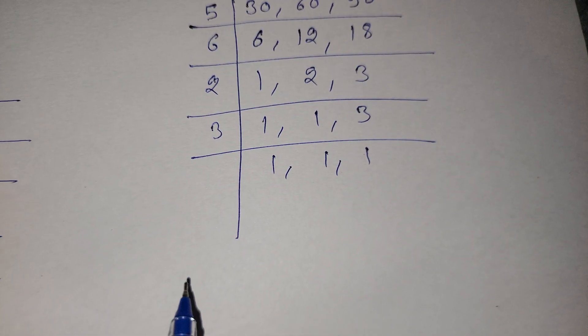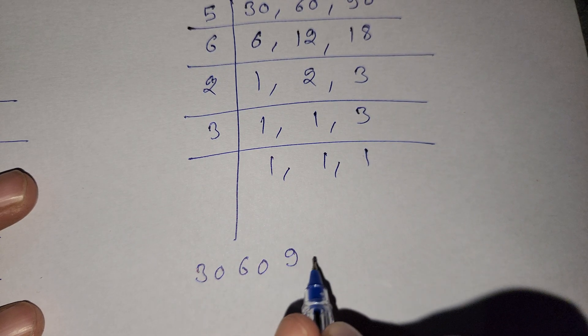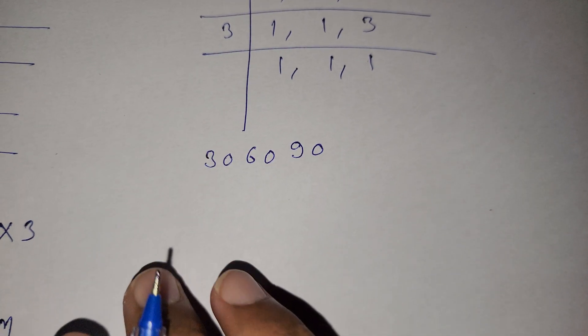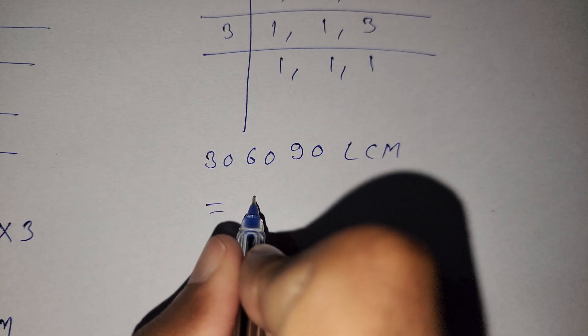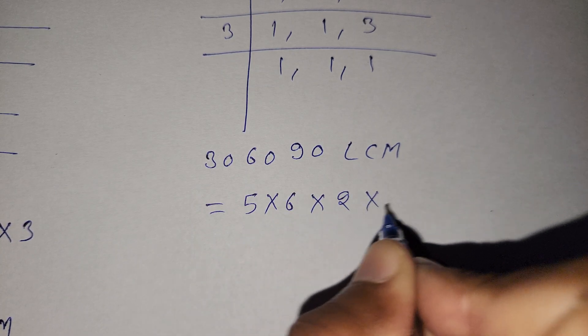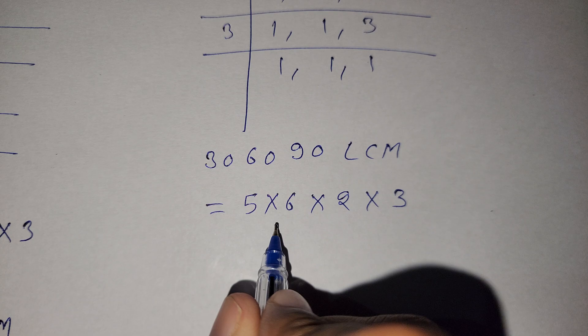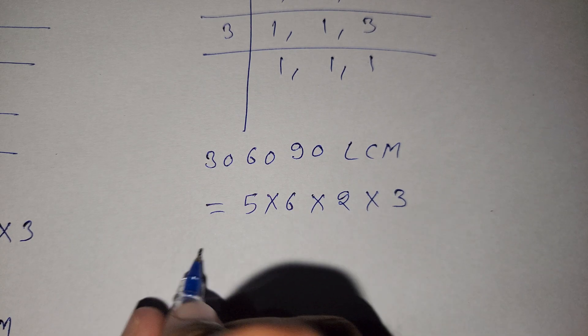So we write 30, 60 and 90. So here is our LCM: 5 multiply 6 multiply 2 multiply 3. 5 times 6 is 30, 3 times 2 is 60, 6 times 3 is 180.